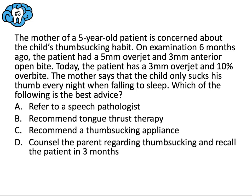In just six months, the patient's overjet and overbite markedly improved since the last appointment, suggesting the mother is telling the truth and the oral habit has become less frequent. When thumb-sucking happens less than four to six hours a day, teeth can begin to assume a more normal position. The risk of malocclusion is a function of frequency, duration, and intensity. Because the habit has decreased and occlusion is improving, the best option is to counsel the parent and see them back in three to six months. The answer is D.